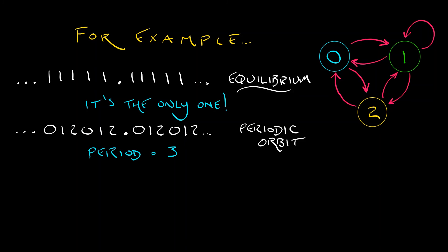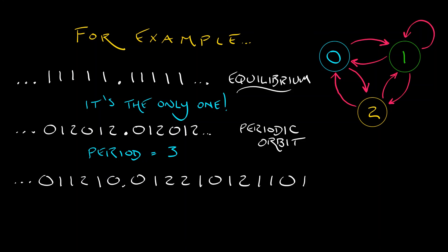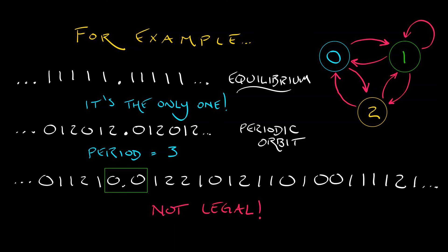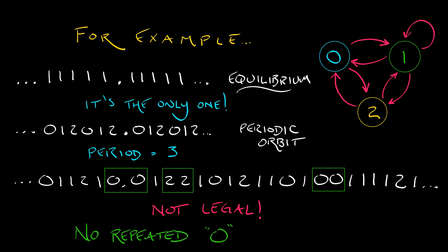In general, if I pick an initial condition in the invariant set and look at its itinerary, it's going to be some string of zeros, ones, and twos. But if I write down a random such string, we have a problem — it may not be a legal string. Take a look at places where there's a 0, 0 or a 2, 2: those repeated zeros or repeated twos are not allowed. Those are not permissible paths in this directed transition graph.